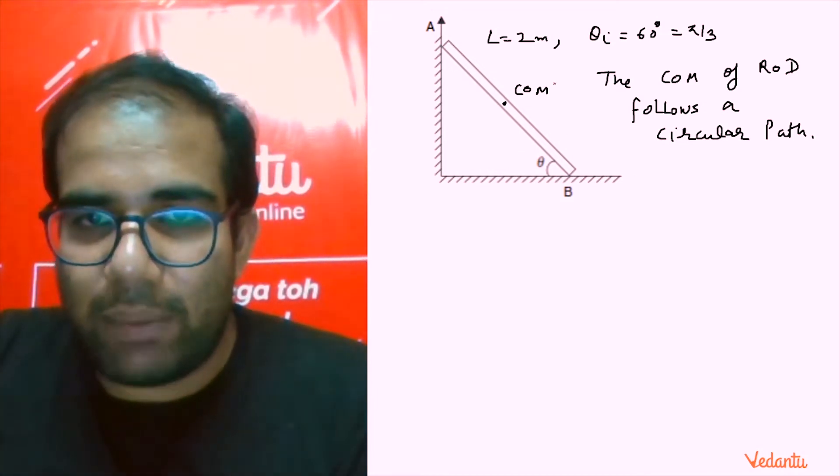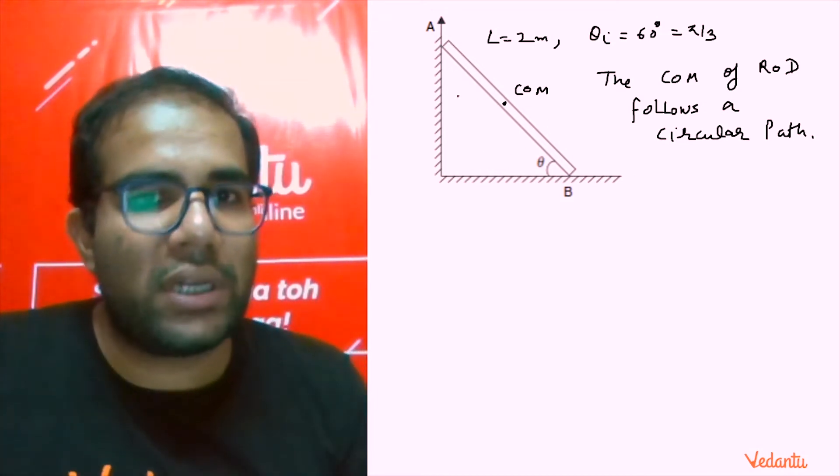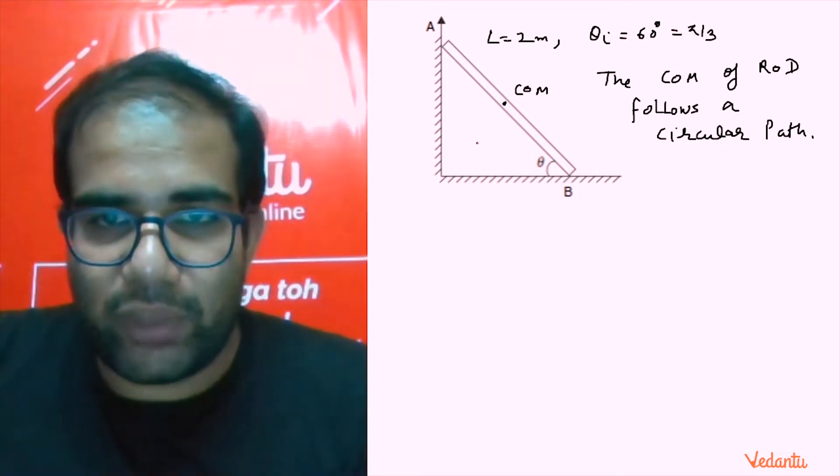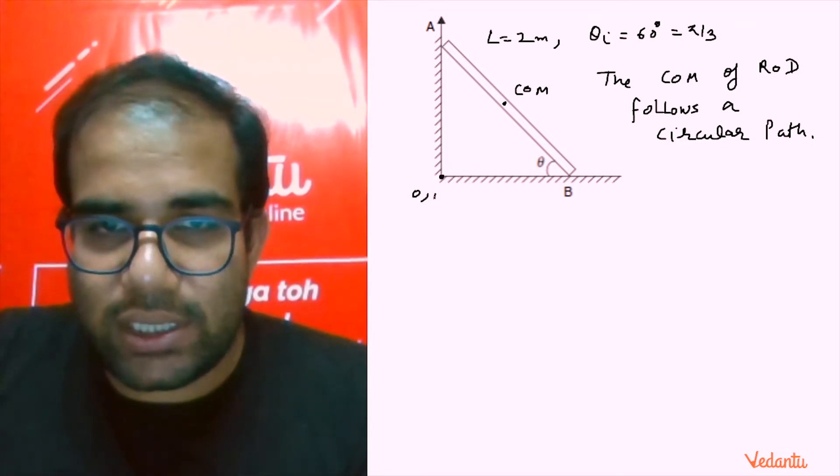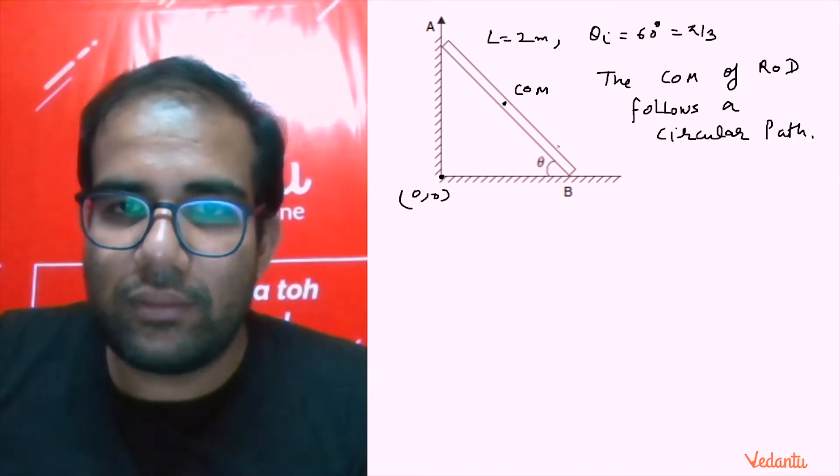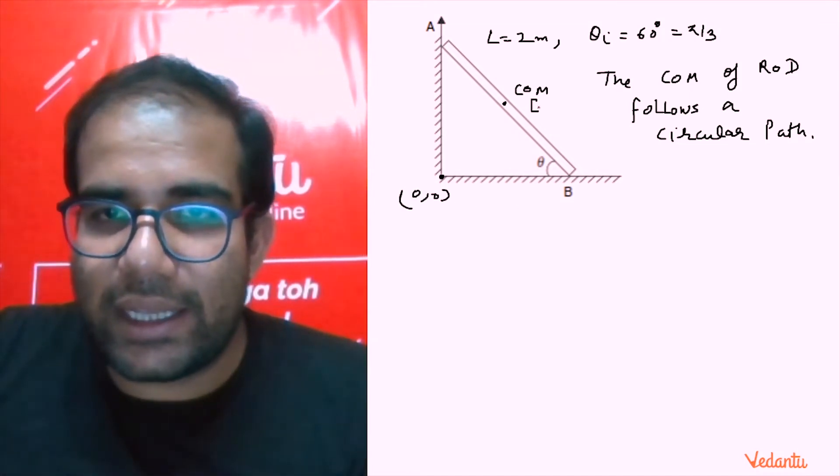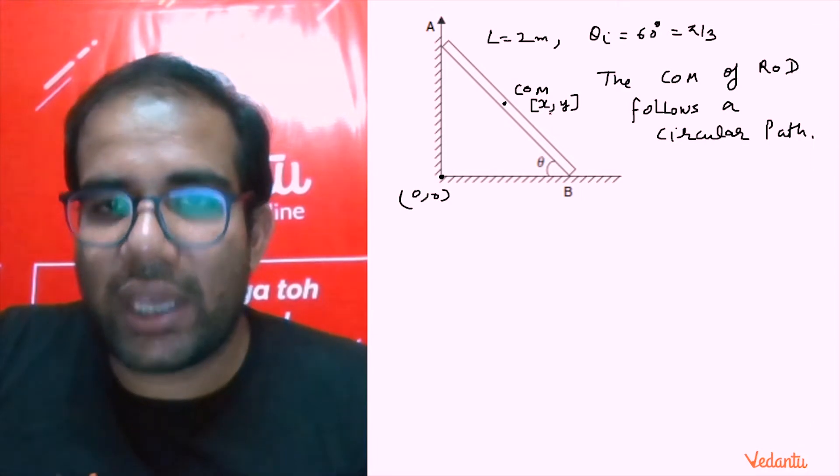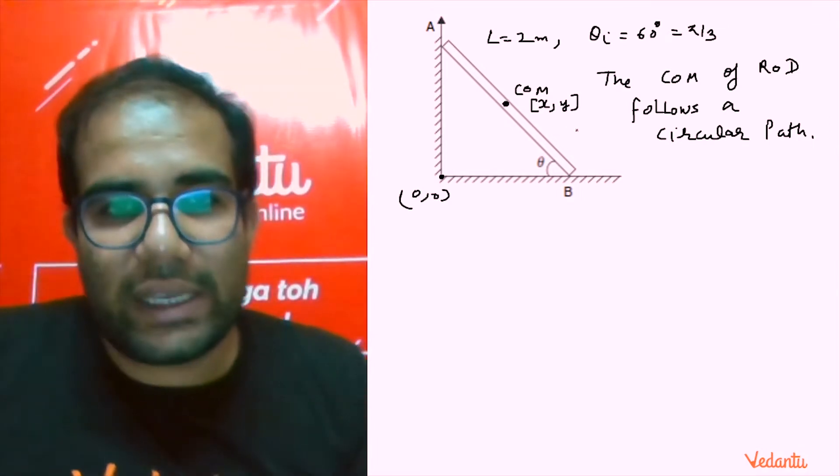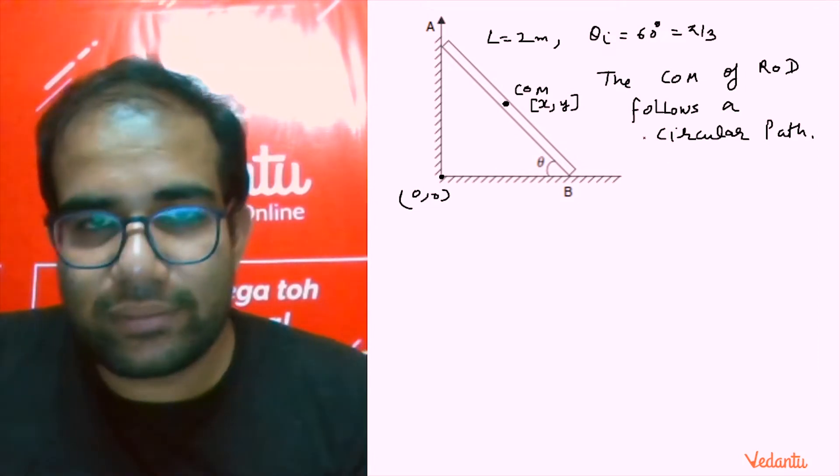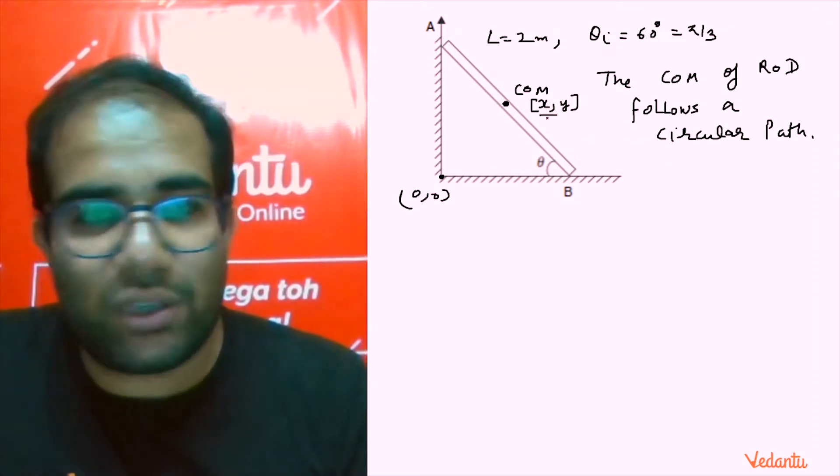The center of mass of rod in these sliding question, it is the standard concept, follows a circular path. I will prove it in front of you. This way the center of mass has coordinates 0,0 and let's say the center has coordinates x,y.